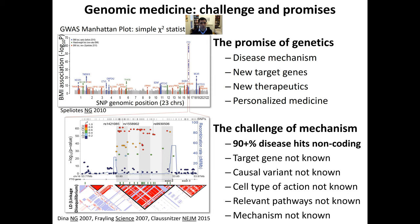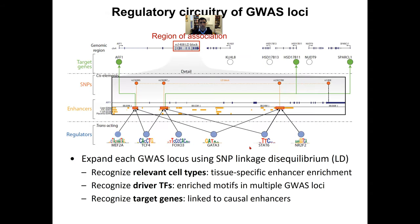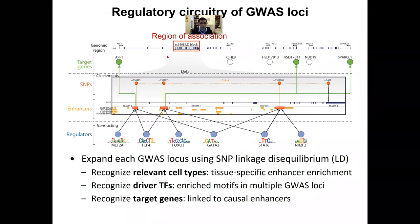They do not perturb the protein directly, which makes it difficult to understand what is the target gene, what is the causal variant, what is the cell type of action, what are the relevant pathways, and what are the mechanisms? To understand these loci, what we need is the circuitry, rather than just a region of association with the disease.